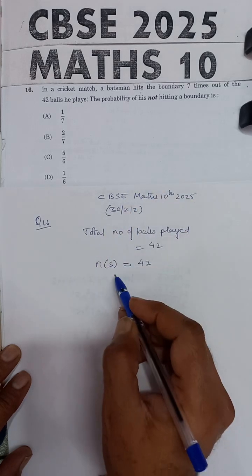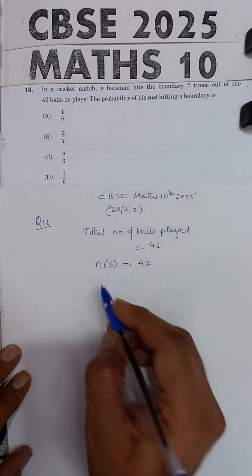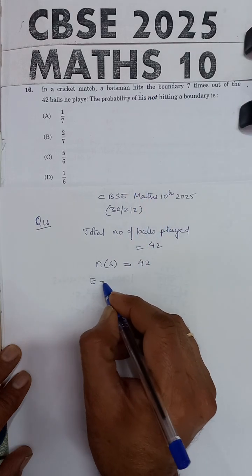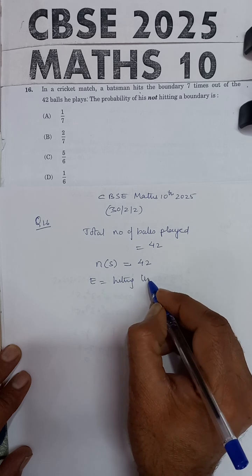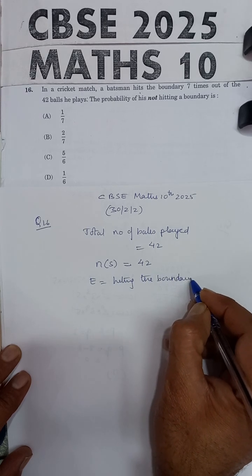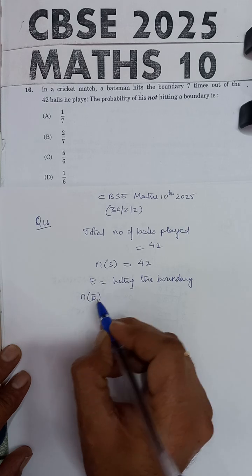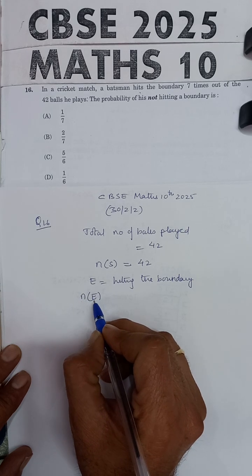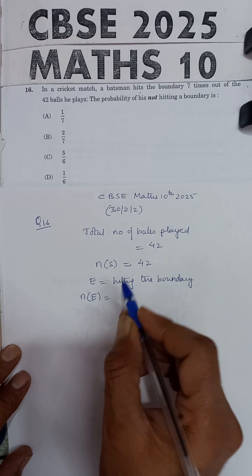Now out of 42, 7 times the player is hitting the boundary. Suppose E is the event of hitting the boundary. In this, the number of favorable cases of E, that is the number of balls in which the player is hitting the boundary, is given equal to 7.